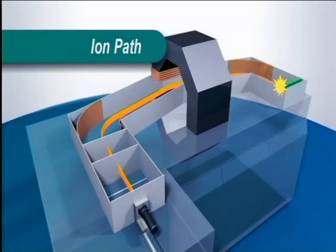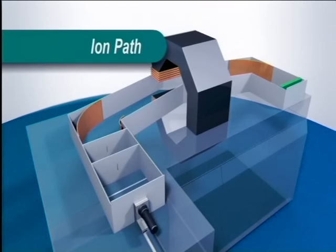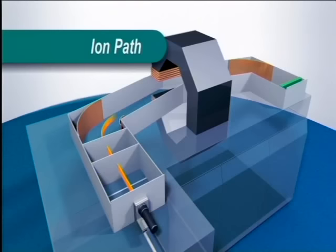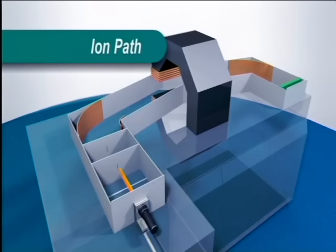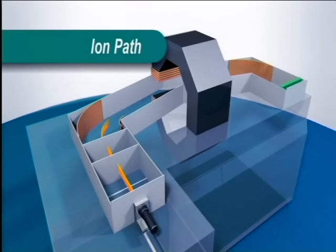The amount of deflection by the magnetic field depends on the mass of the ion — strictly its mass-to-charge ratio — but the vast majority of ions have only a single charge. The deflection also depends on the strength of the field. Heavier ions will not be deflected sufficiently in the magnetic field to reach the detector; light ions will be deflected too much. During a run, the magnetic field is gradually increased so that ions of successively greater mass enter the detector.